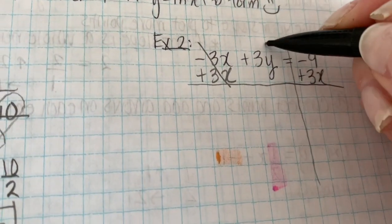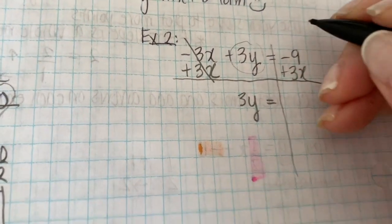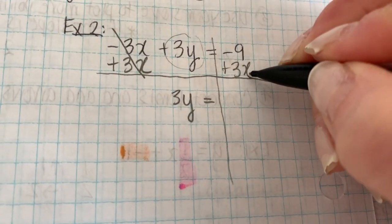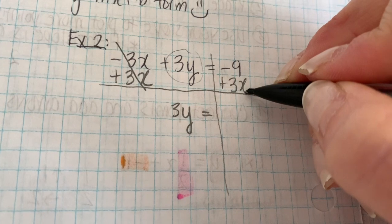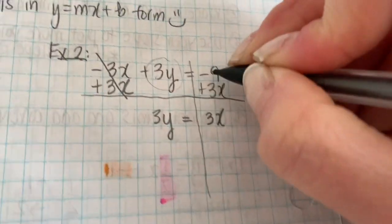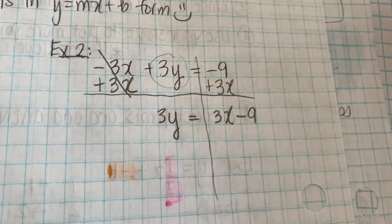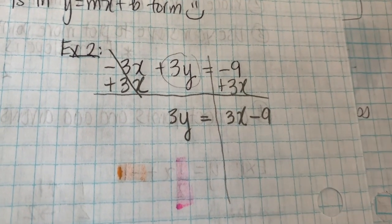And I'm going to bring down my 3y. And that's going to be equal to, I'm going to put my 3x in front so that I'm in y equals mx plus b form. It's positive. And now I have a negative 9. So this is 3x minus 9. So we're almost there. We just have to do step 2.